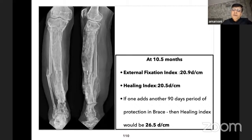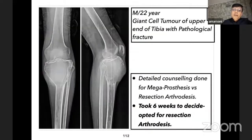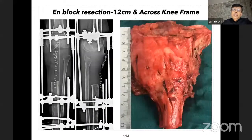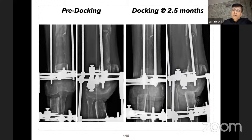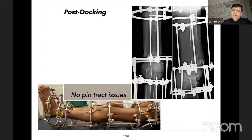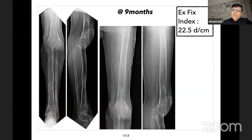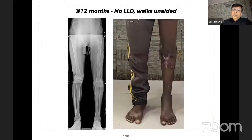Another case: giant cell tumor with pathological fracture. Patient was counseled in detail for megaprosthesis versus resection arthrodesis. After six weeks to decide, the patient opted for resection arthrodesis. A large en-bloc resection was done creating a 12 centimeter bone gap. Dual corticotomy at the distal femur and distal tibia was done—converging trifocal osteosynthesis. Docking was done at two and a half months. Frame was removed at nine months; healing index was approximately 22.5 days per centimeter. Protected in cast for three months. At 12 months, no limb discrepancy and walking unaided.